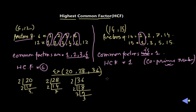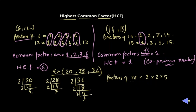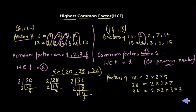Collecting the prime factors individually and writing them using multiplication signs: the prime factorization of 20 is 2 × 2 × 5. The prime factorization of 28 is 2 × 2 × 7. The prime factorization of 36 is 2 × 2 × 3 × 3. Those are the prime factorizations of 20, 28, and 36.